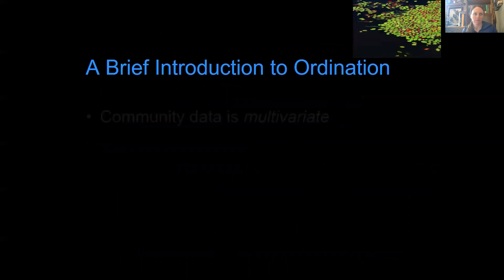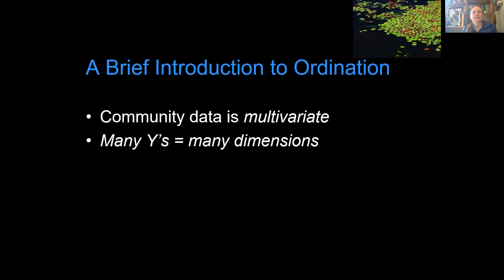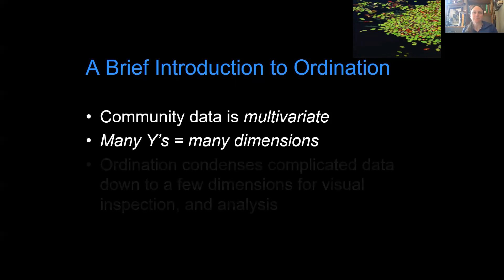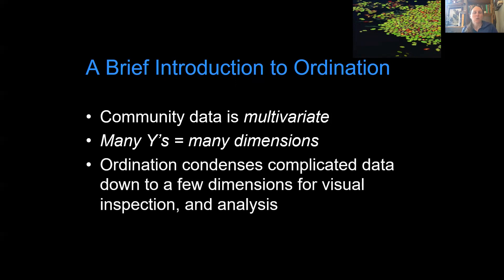So here's a brief introduction to ordination. Because all community data is multivariate, and we're dealing with multivariate mathematics, which is super complicated, we're not going to go into the details of it. But we're dealing with data sets that have many, many, many Y variables. This means that they're multi-dimensional. And in fact, your data set is as dimensional as the number of species you have, which can kind of blow your mind. So ordination's goal is to condense complicated data down to just a few dimensions for visual inspection and analysis.